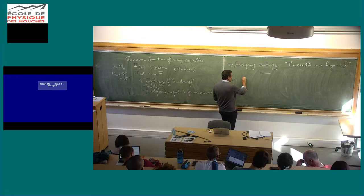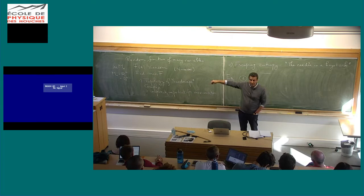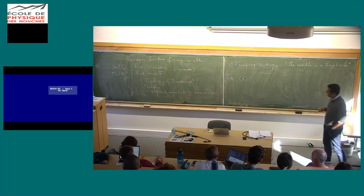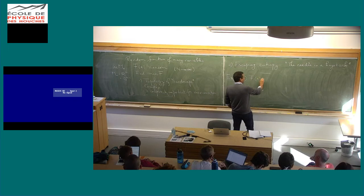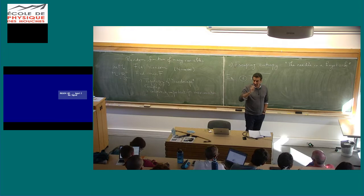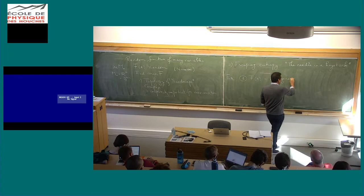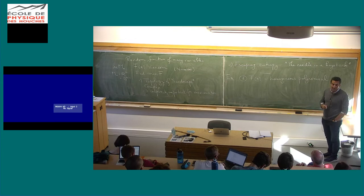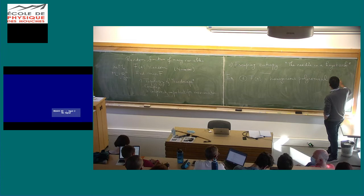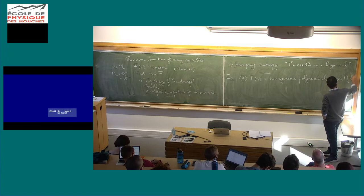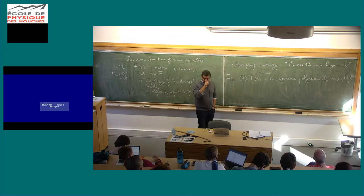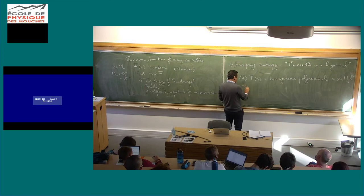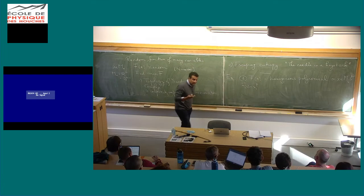I will essentially restrict myself to these two cases: R^n and the sphere — the Euclidean space and the sphere, maybe the ball sometimes. So let's take F to be a polynomial. You can't do simpler than a polynomial. You take a homogeneous polynomial of many variables. If it's homogeneous, you can restrict it to the sphere — essentially you have the same information, then you just dilate it. So you restrict it on the sphere. And then you ask yourself: can that be a complex function?